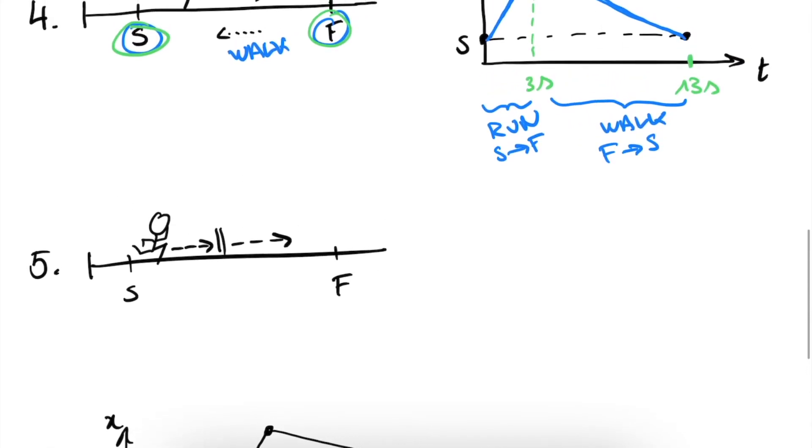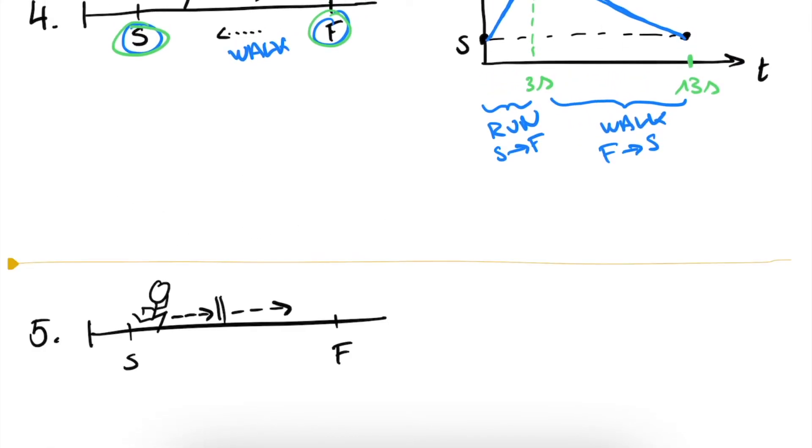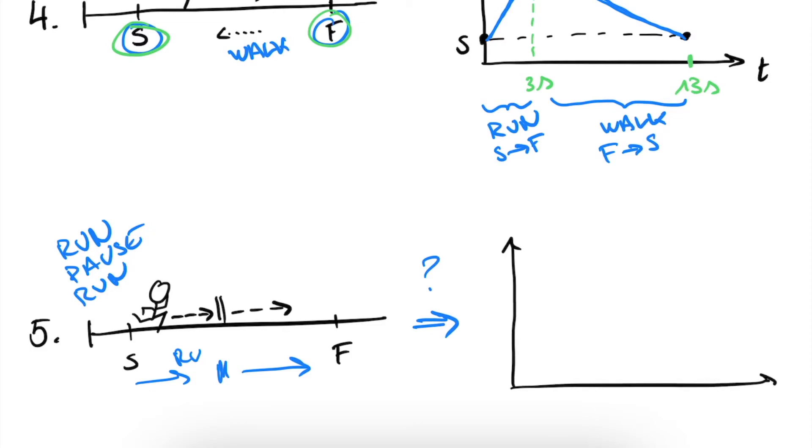Let's take it a little bit further now. Now, the fifth exercise is this one. We run from S to whatever, then we take a pause, and then we run along further to F. So here we run, then we take a pause, and then we run to F. So how does this actually translate in this nice XT diagram representation?